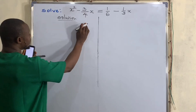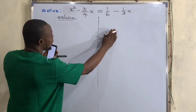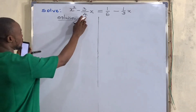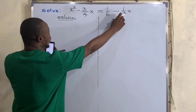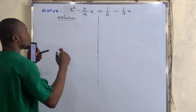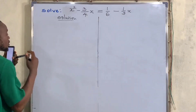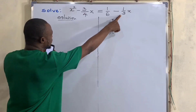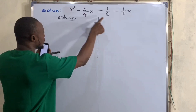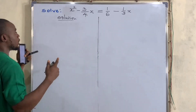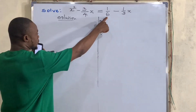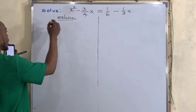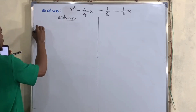We have x squared minus 3 over 4x to be equal to 1 over 6 minus 1 over 3x. Now since we have denominators 4, 6, and 3, we find the LCM of all the denominators. To get the LCM: 4 times 3 gives us 12, and 6 can go into 12, so our LCM is 12.